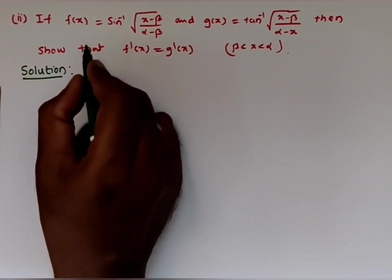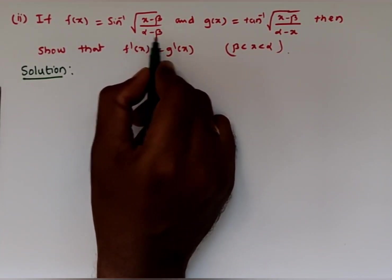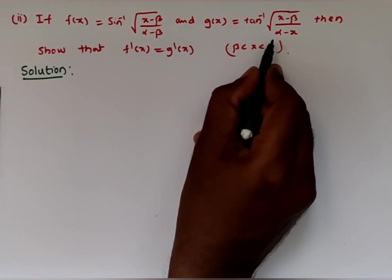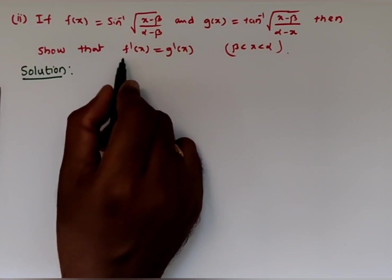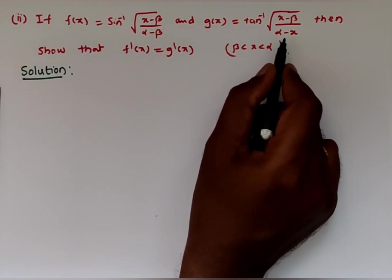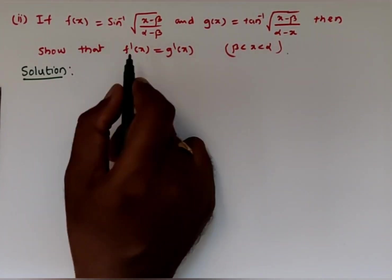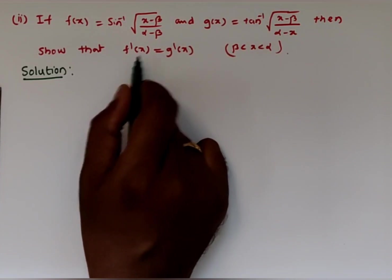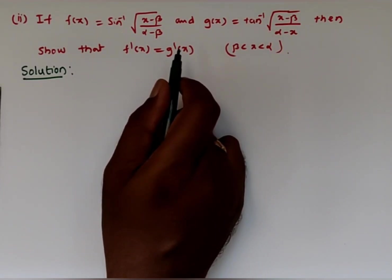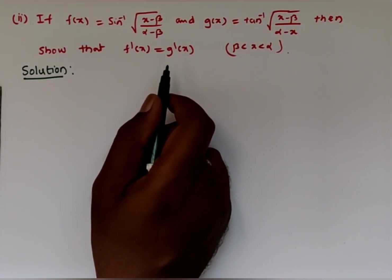Second problem: if f(x) = sin⁻¹(√[(x minus β)/(α minus β)]) and g(x) = tan⁻¹(√[(x minus β)/(α minus x)]), show that f'(x) = g'(x). To show this, we first show f and g are the same function. If f and g are the same, their derivatives are also the same.